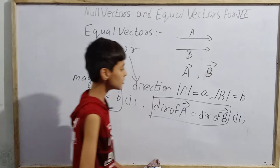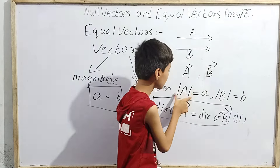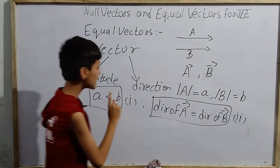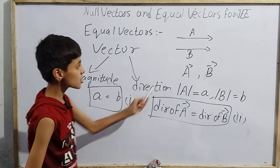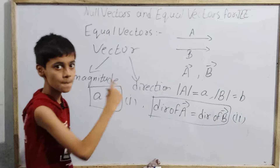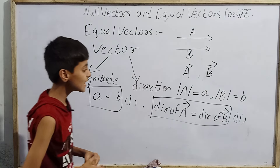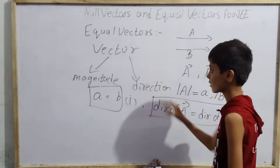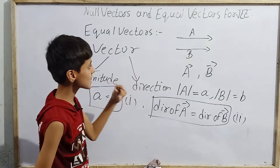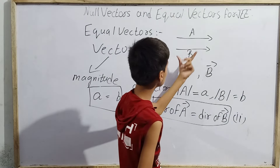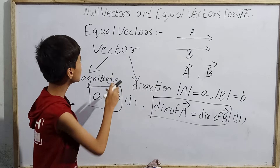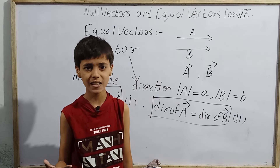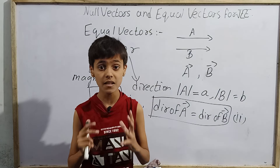The second condition is that the direction of vector A should be equal to the direction of vector B. So if we have two vectors where mod A equals mod B, meaning their magnitudes are equal, and the direction of vector A equals the direction of vector B, then those two vectors are equal vectors. Vector is made only of magnitude and direction — if both are the same, the two vectors are equal vectors. In my next videos, we will study parallel vectors, anti-parallel vectors, and many other interesting kinds of vectors. Thank you.